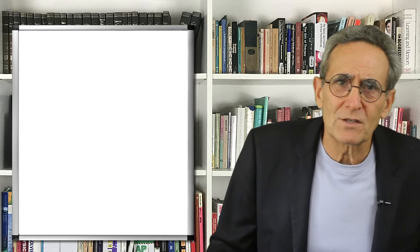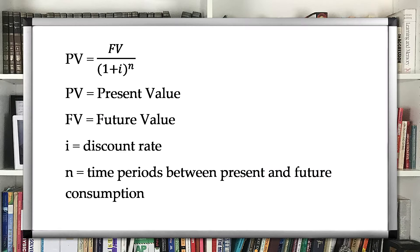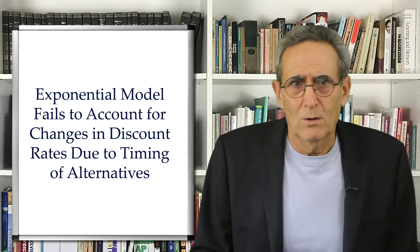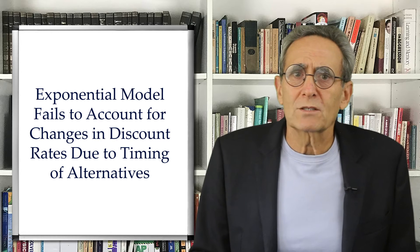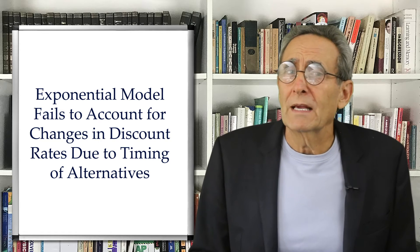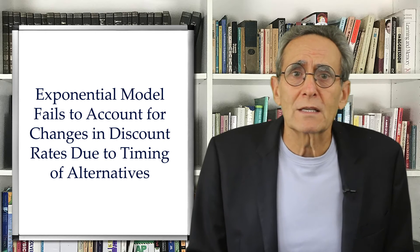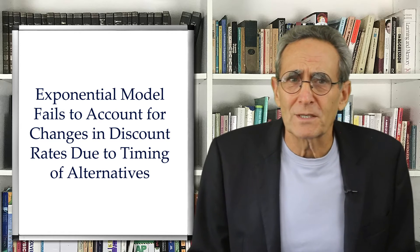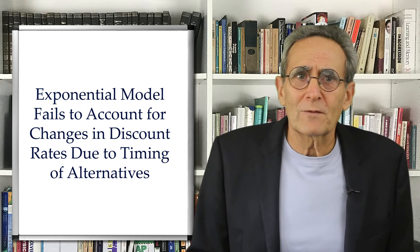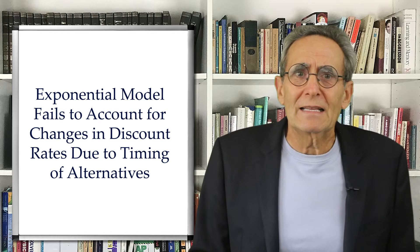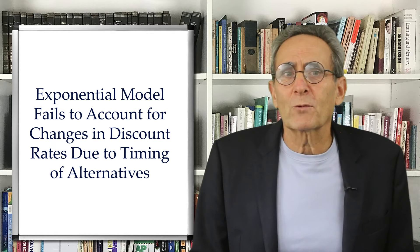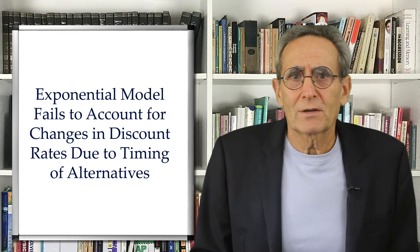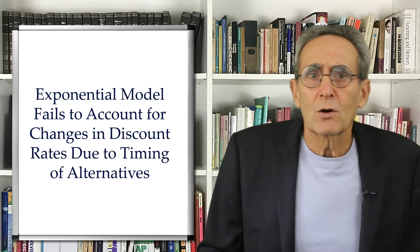All of our formulas up to now have assumed discrete compounding periods. The exponential model implies that if I am willing to trade three cookies one week from now for one cookie today, I should be willing to trade having one cookie two weeks from now for getting three cookies three weeks from now. Notice each exchange involves a one-week delay in consumption. But it turns out preferences often reverse — as long as I cannot eat that cookie now, I will actually prefer getting the three cookies three weeks from now compared to having only one cookie two weeks from now.